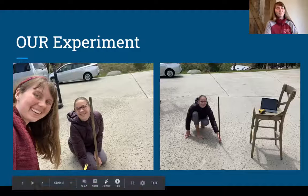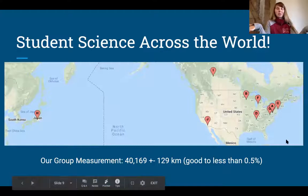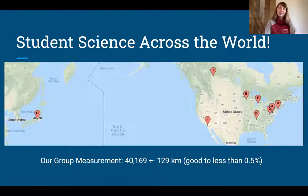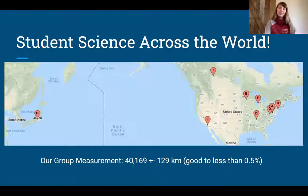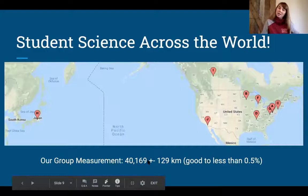Here are all the locations where the students did the experiment. I think the person in Japan is a good friend of mine. Here I am in San Diego. We've got Canada, a lot of people on the East Coast, some around Cambridge. Our math is a little different because none of us are exactly north of another person, and there are multiple measurements, but our final group measurement ended up being 40,169 with an error of 129 kilometers. This is good to less than 0.5%. So this is a relatively simple experiment for what we're trying to calculate, but it's pretty accurate.